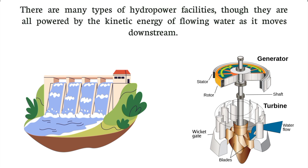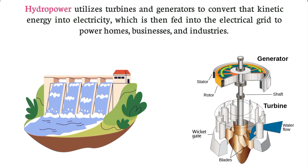There are many types of hydropower facilities, though they are all powered by the kinetic energy of falling water as it moves downstream. Hydropower utilizes turbines and generators to convert that kinetic energy into electricity, which is then fed into the electrical grid to power homes, businesses, and industries.